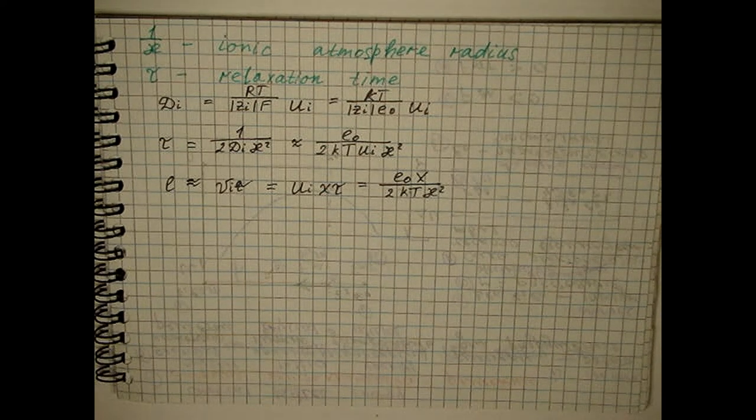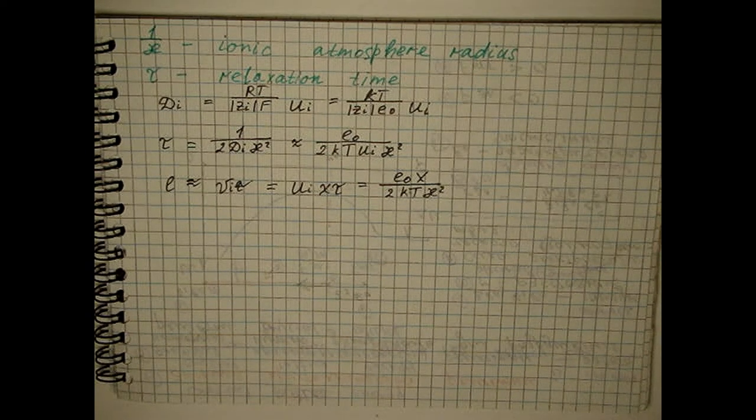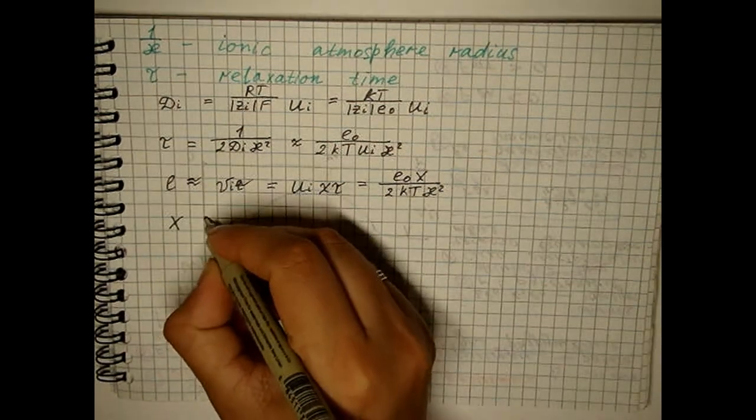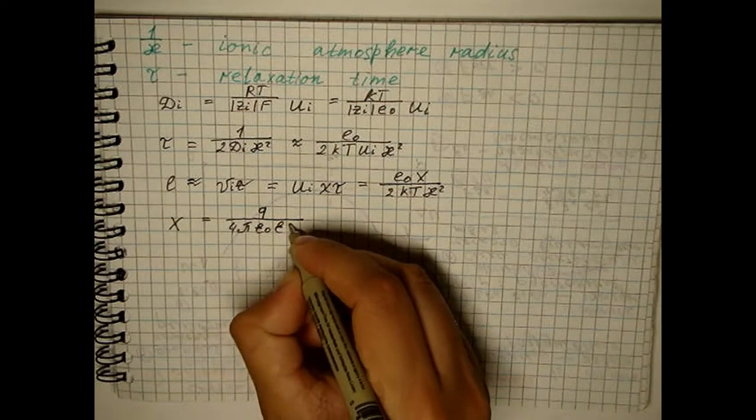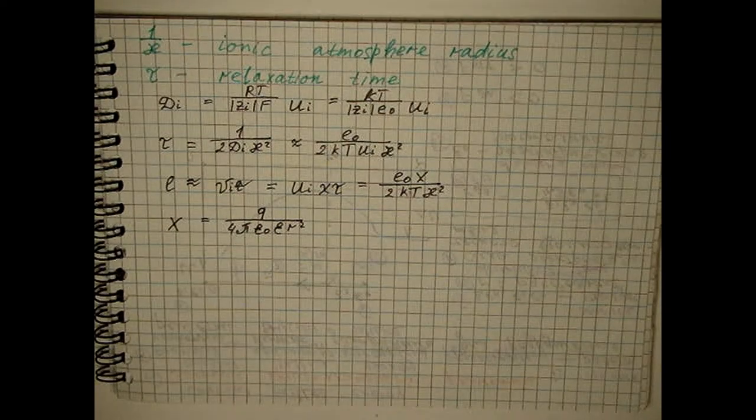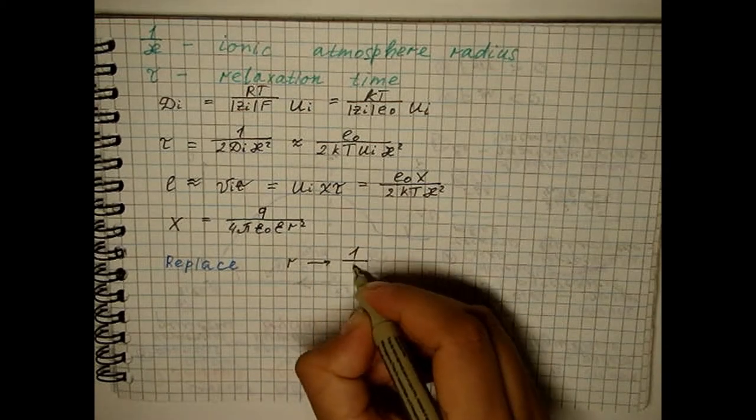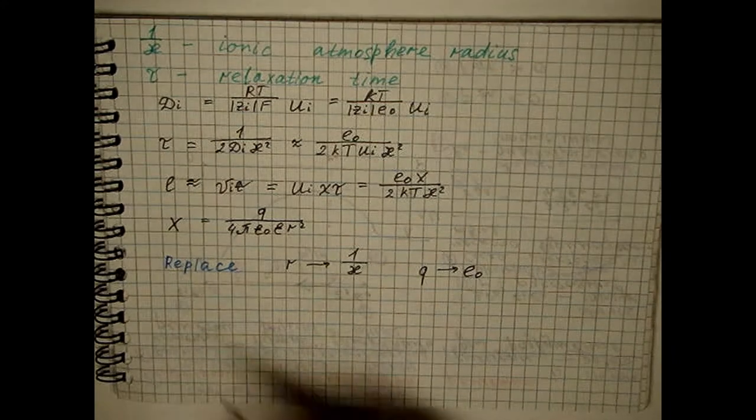Let's also assume that the returning field is a fraction of the field of the ionic atmosphere, which can be calculated by the formula. With the replacement, that is, we get the expression.